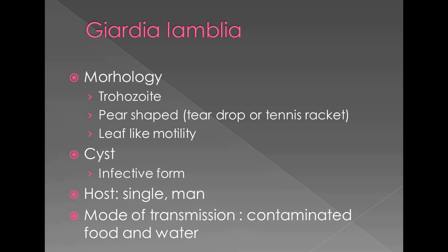Giardia lamblia occurs in two forms: trophozoite and cyst. The trophozoite is pear-shaped, teardrop-shaped, or has a tennis racket appearance, also called the old man face-like appearance. The trophozoite of Giardia lamblia has a leaf-like motility — a gliding type of motility.